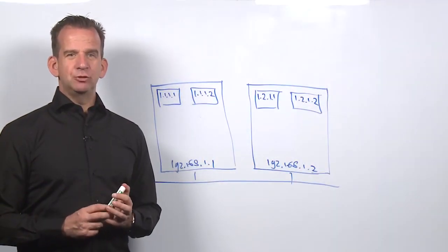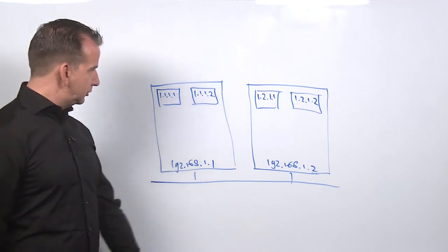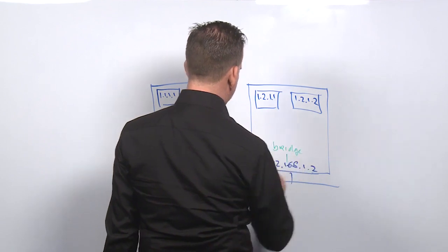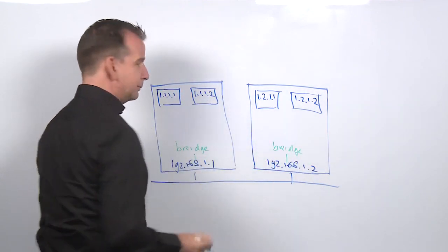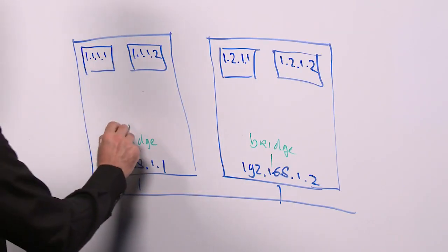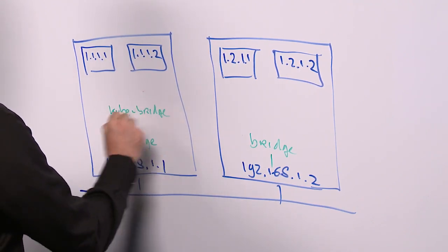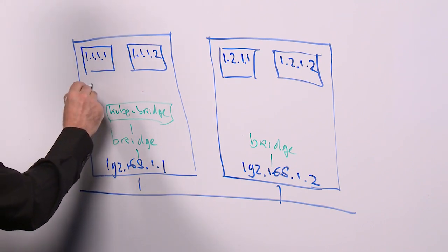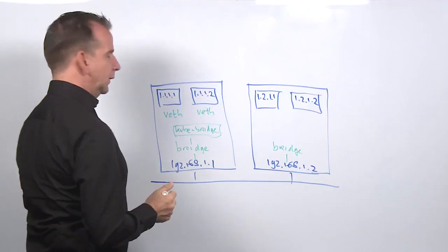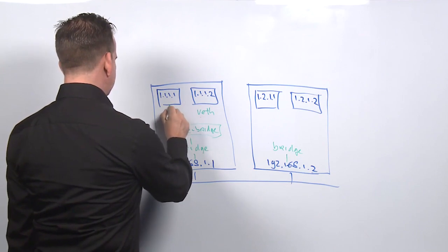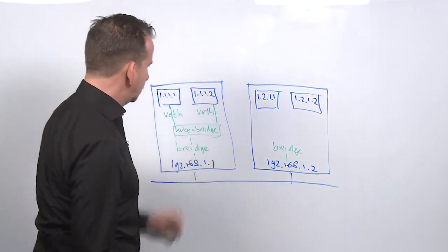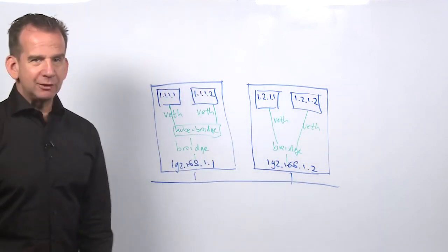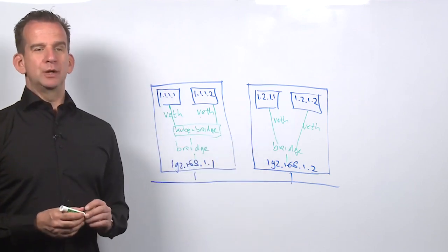We've previously seen how Kubernetes networking is set up from an IP address perspective — now let's fill in what's happening inside. The minimal requirement is that you have a bridge — a Linux software bridge that allows different pods to communicate. On top of this bridge you may also have a kube-bridge. The pods connect to this interface using VETH — virtual Ethernet cables — like a virtual patch cable. You'll actually be able to see all of these components when you explore networking in a Kubernetes environment.